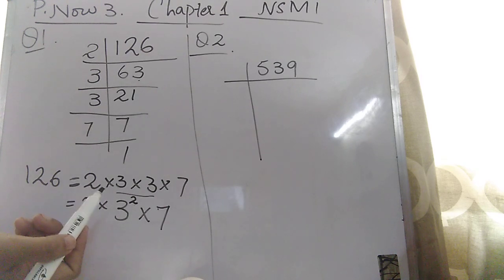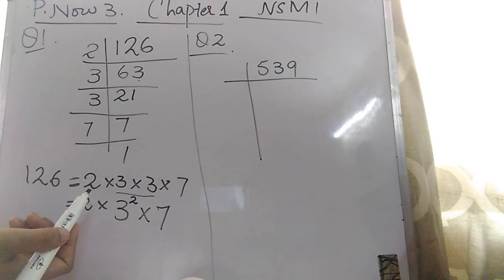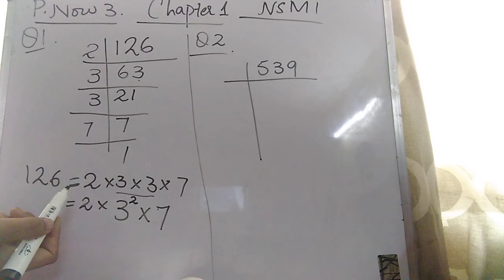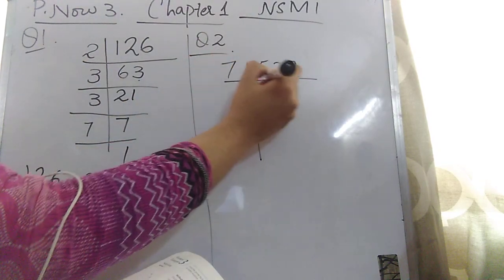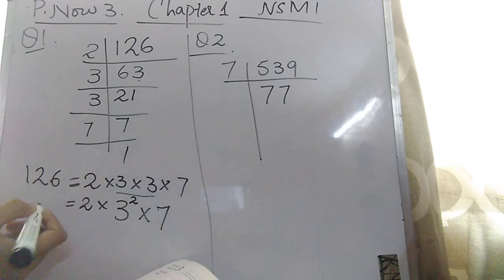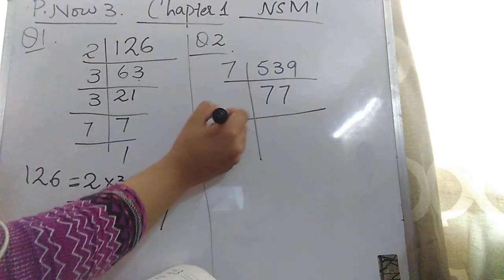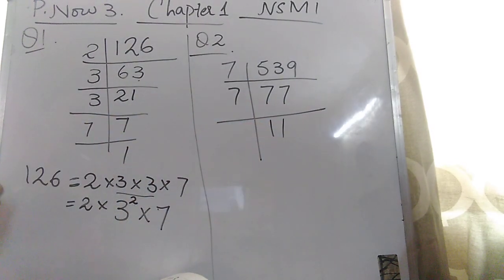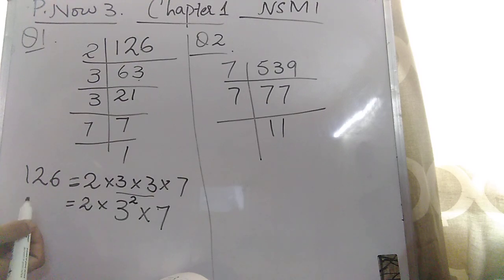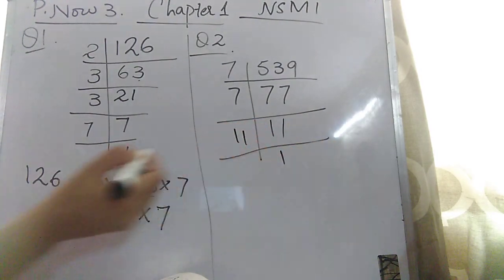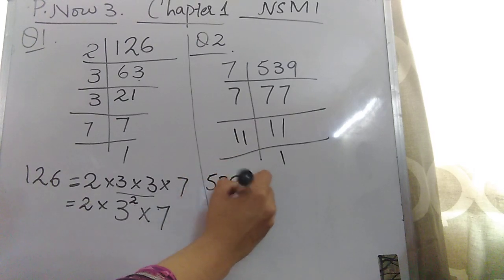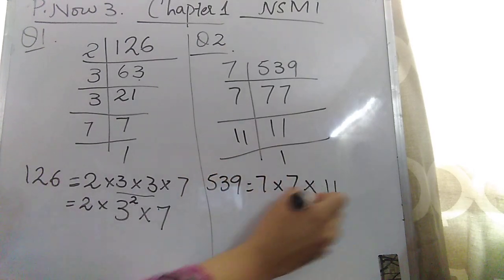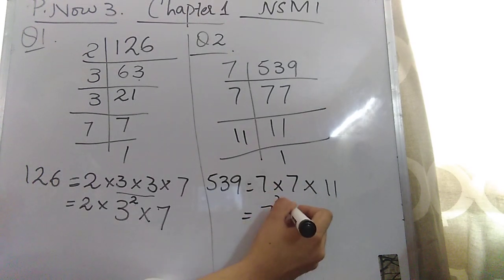539 is also not divisible by 4, not by 5, and not by 6. Now let's come to 7 — yes, it is divisible by 7. 7 × 77 = 539. This 77 is again divisible by 7: 7 × 11 = 77. Now 11 is left, and it goes into itself: 11 × 1 = 11. So the prime factors of 539 are 7, 7, and 11. We can write the two 7s as 7² × 11.